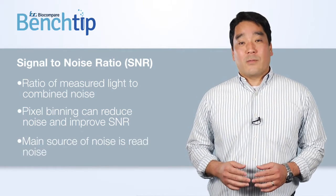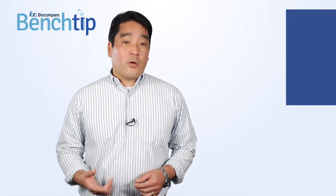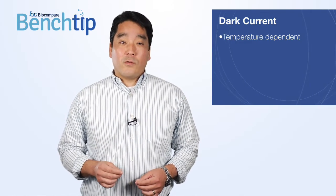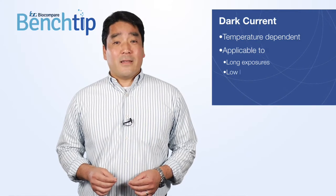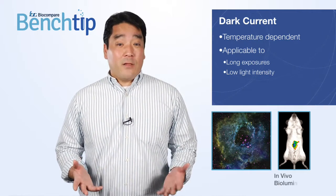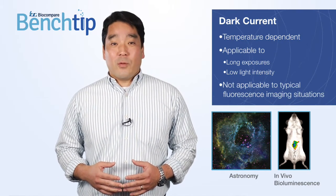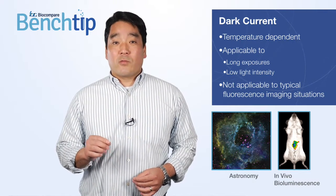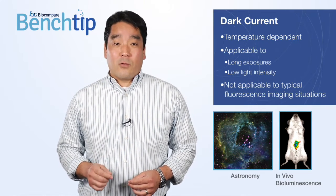The main source of noise in fluorescence microscopy with shorter exposures is read noise, which is typically much higher than dark current noise. Dark current, another source of noise, does depend on the temperature of the sensor. Cooling the camera reduces dark current noise and should be considered for situations requiring long exposures, or if light intensity will be extremely low, such as in vivo bioluminescence or astronomy. In general, dark current will not have a major impact on typical fluorescence imaging situations. So unless you are imaging under conditions requiring long exposures or low light intensity, dark current will have minimal impact on your imaging.